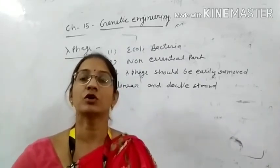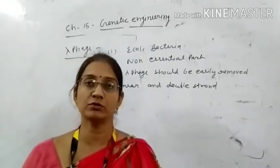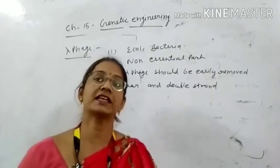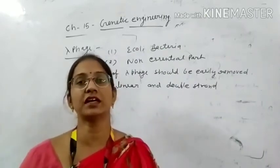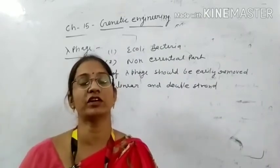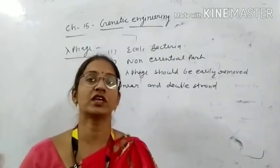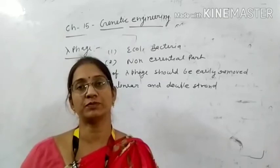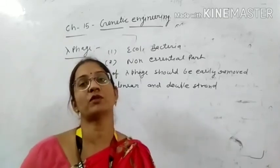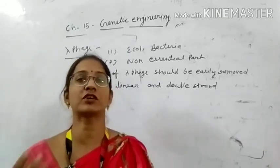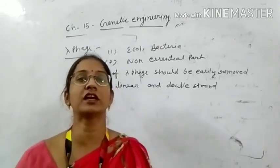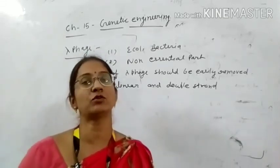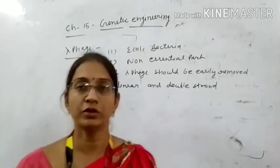So that was the second cloning vector, bacteriophage, which we use as a cloning vector. Next, we will study the third cloning vector, which is Cosmids. We will study Cosmids as the third cloning vector.